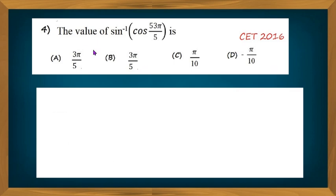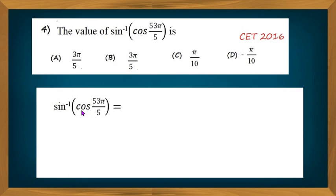This question asks for the value of sine inverse of cos(53π/5). To find the value of sine inverse of cos(53π/5), express this in terms of sine, because sine inverse of sine(x) equals x, and x should be in the interval minus π/2 to plus π/2.